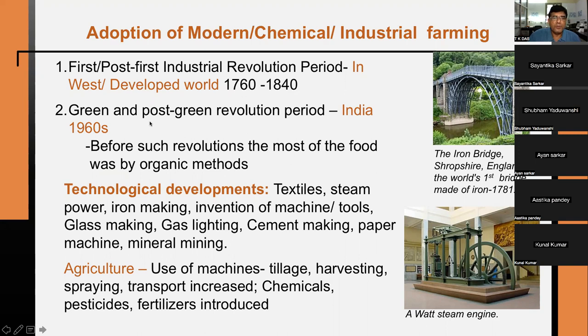Coming to India — the Green Revolution came in the 1960s. Before that, we were using all kinds of organic systems. It was totally an organic system in India.